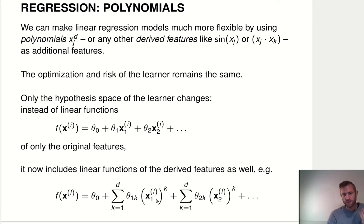For example, if we're talking about only polynomial transformations, we take the first d polynomials of the first feature: x_1, x_1 squared, x_1 to the power of 3, x_1 to the power of 4, all the way up to the power of d. Each of these polynomial transformations gets its own coefficient: theta_1k for k=1 to d. We do that not just for the first feature, but also for the second feature, third feature, and so on.